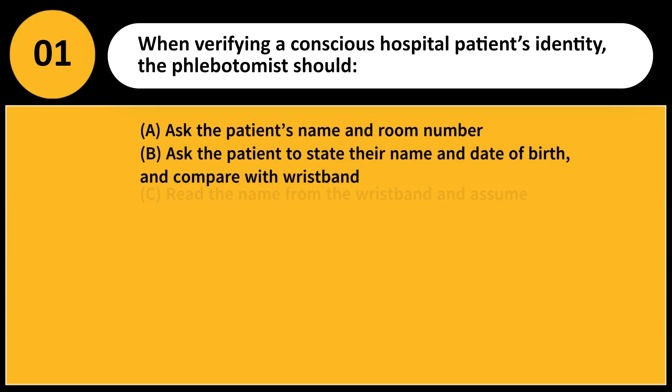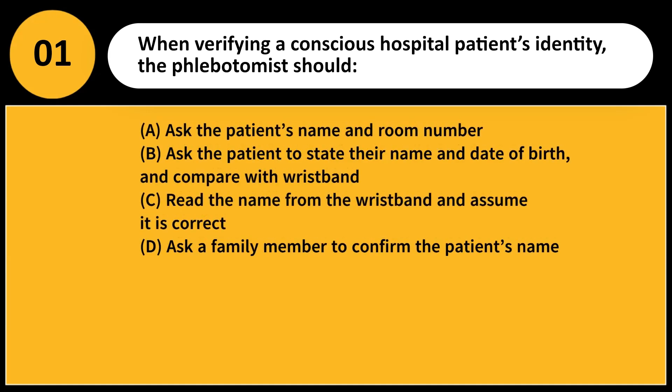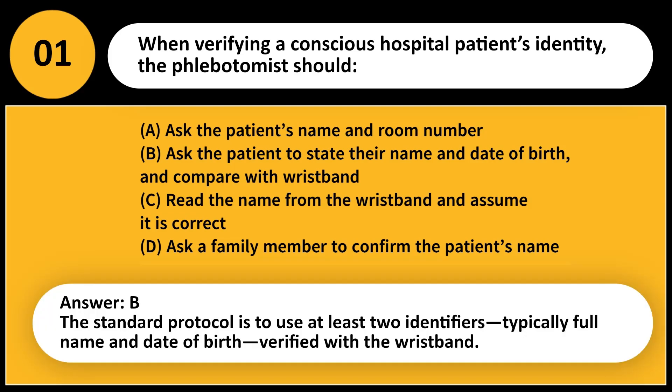When verifying a conscious hospital patient's identity, the phlebotomist should: A. Ask the patient's name and room number. B. Ask the patient to state their name and date of birth and compare with wristband. C. Read the name from the wristband and assume it is correct. D. Ask a family member to confirm the patient's name. Answer: B. The standard protocol is to use at least two identifiers, typically full name and date of birth, verified with the wristband.